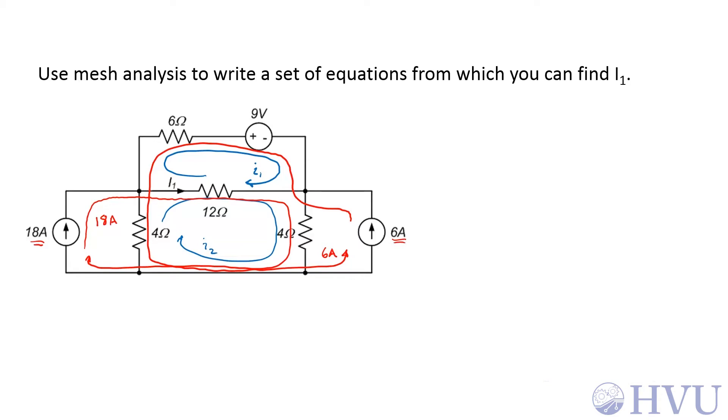Now I'm going to write KVL around my two mesh loops. So KVL on loop 1. I'm going to start here. I'm going to set my polarities for the 6-ohm resistor according to the direction of I1, and I'm going to do the same thing with the 12-ohm resistor. So I have 6-ohms times I1 entering the positive terminal. This 6-amp constrained loop is entering the negative terminal, so that becomes I1 minus 6-amps.